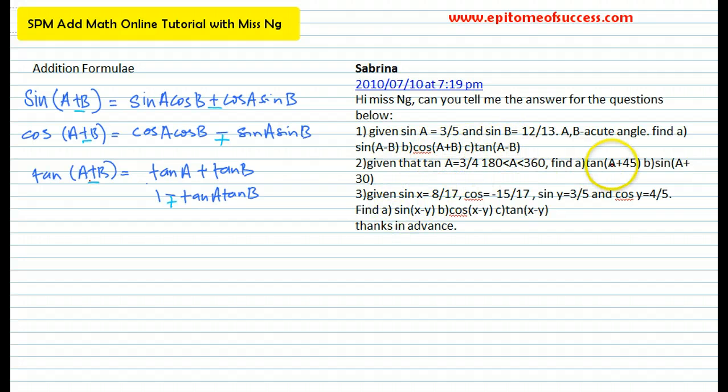You see the question, find tangent A plus 45, sine A plus 30, so you know immediately that you will need to use the addition formula. I've written them down here, and these are all given in the exam, so I suggest that you refer to them as you do the question.